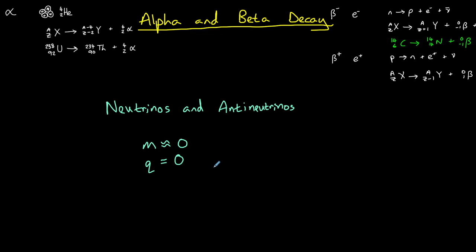Neutrinos were first predicted when scientists noticed that the energy of beta particles varied up to a maximum, even though the energy lost by the nucleus during beta decay was fixed. In other words, there was some missing energy. In order for energy to be conserved in beta decay, there must have been another particle carrying this missing energy away, and so the neutrino was predicted. It was more than 20 years later before scientists actually managed to detect a neutrino.